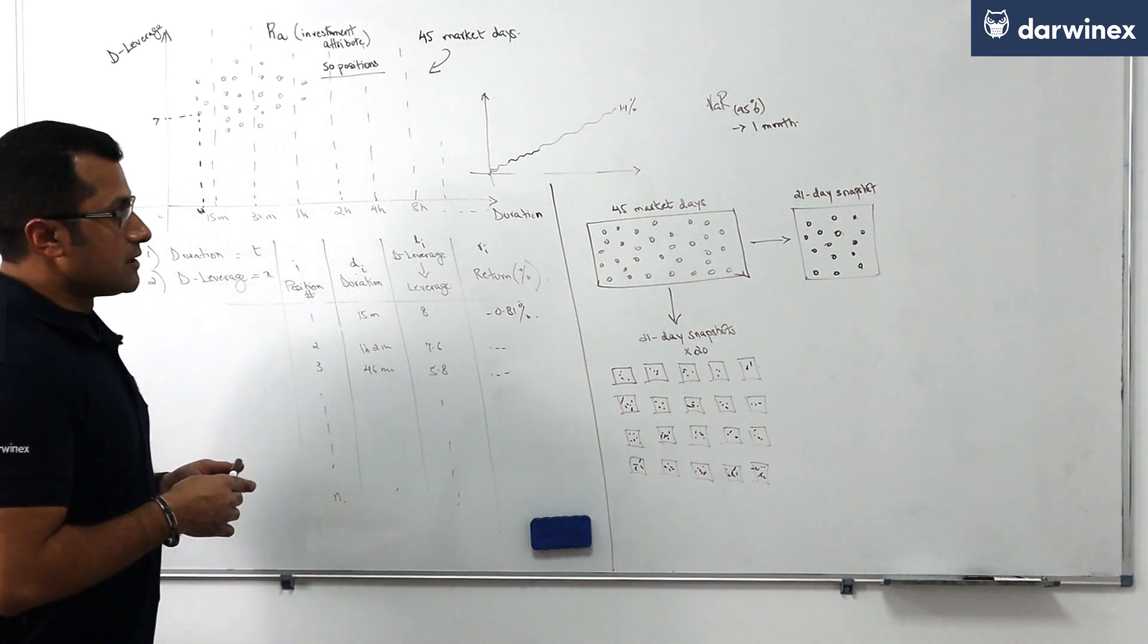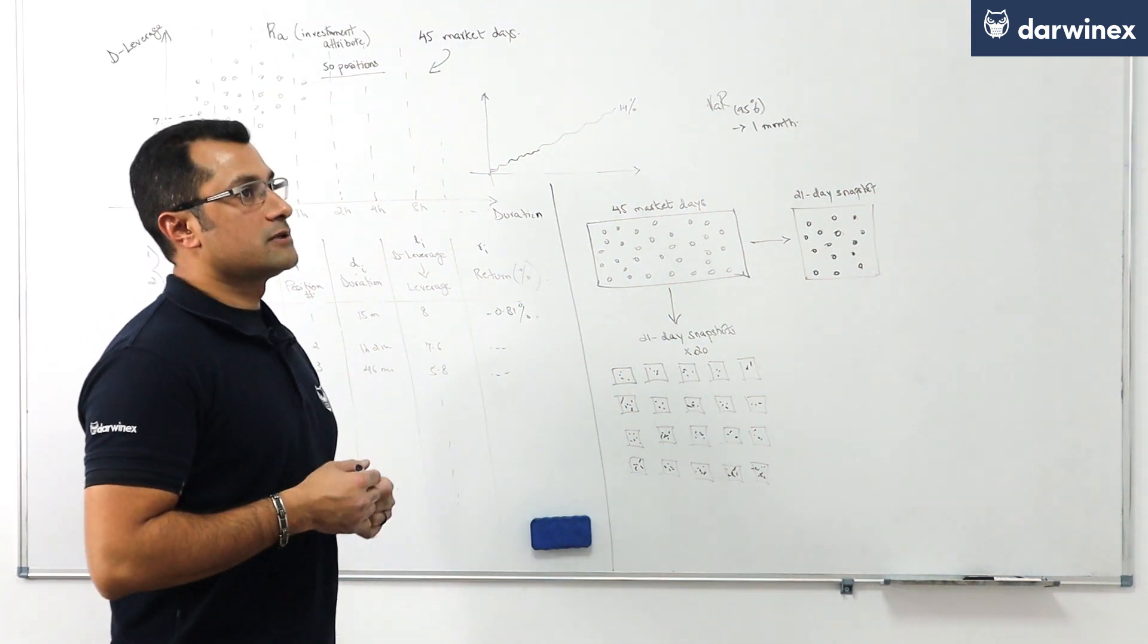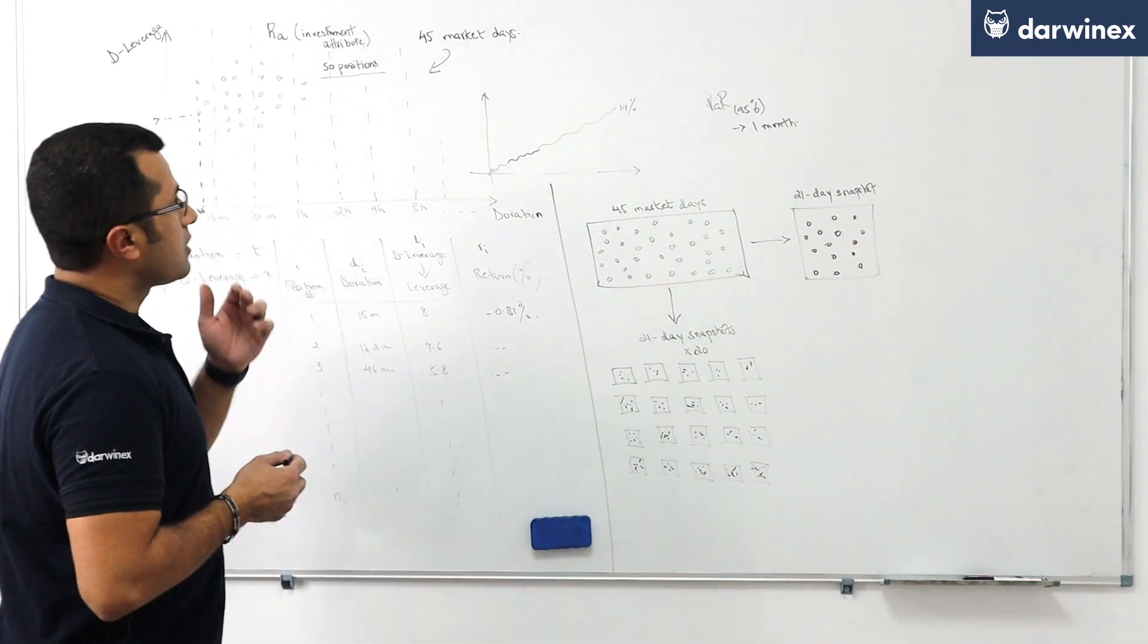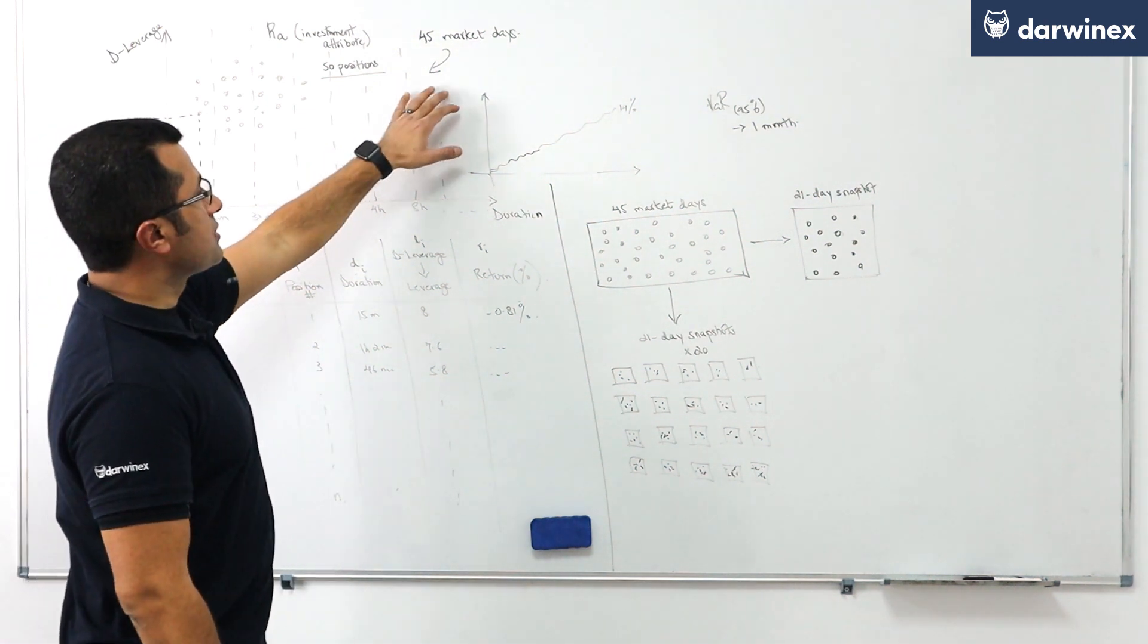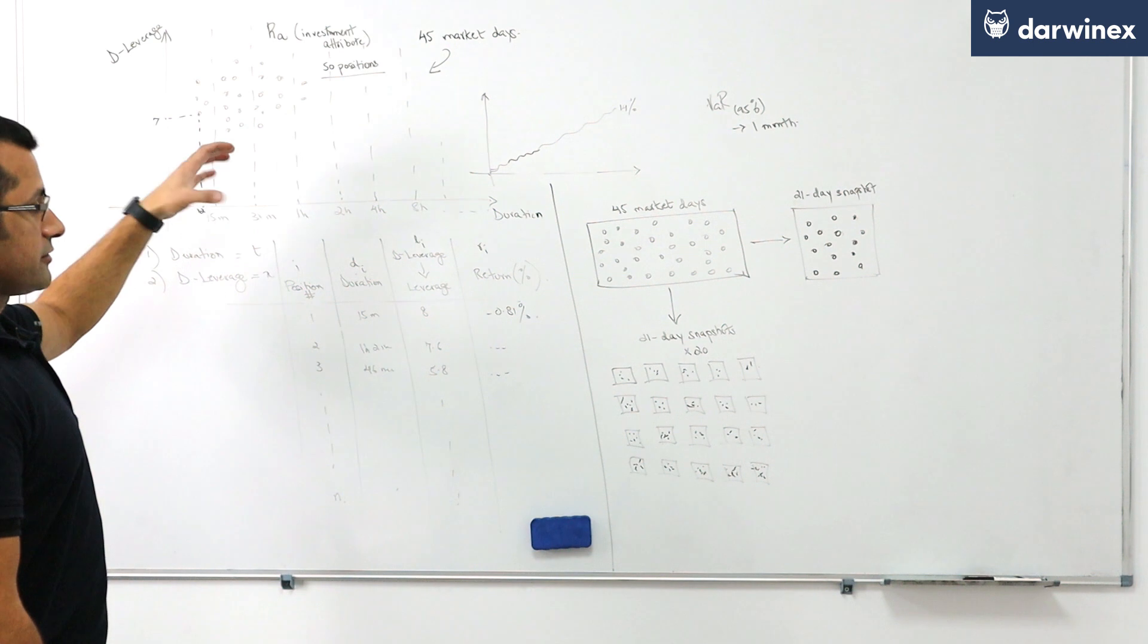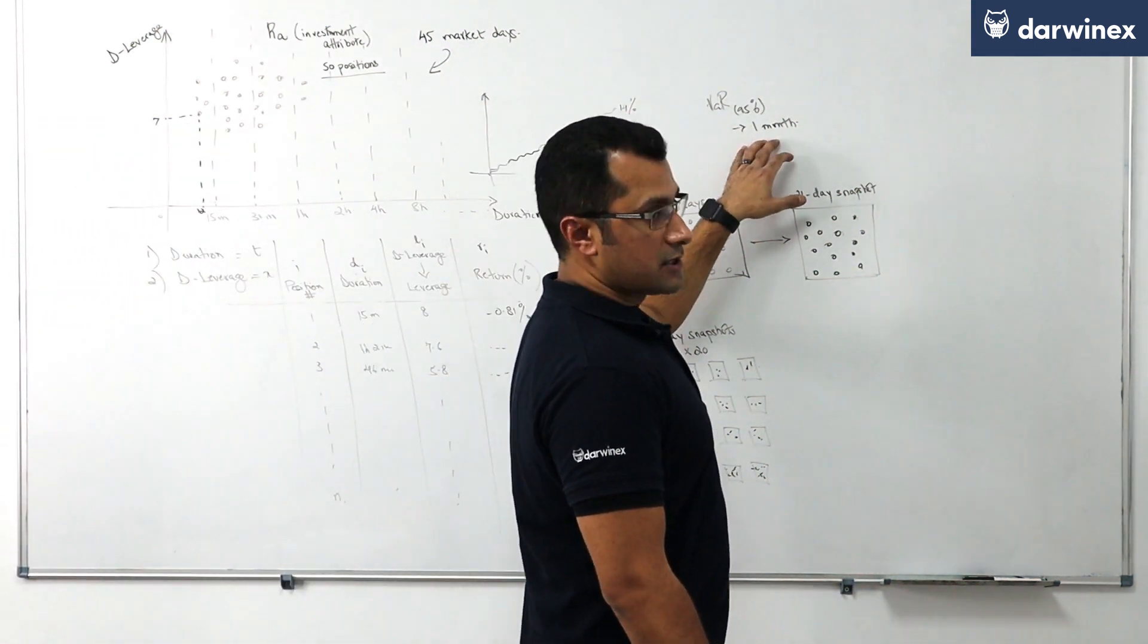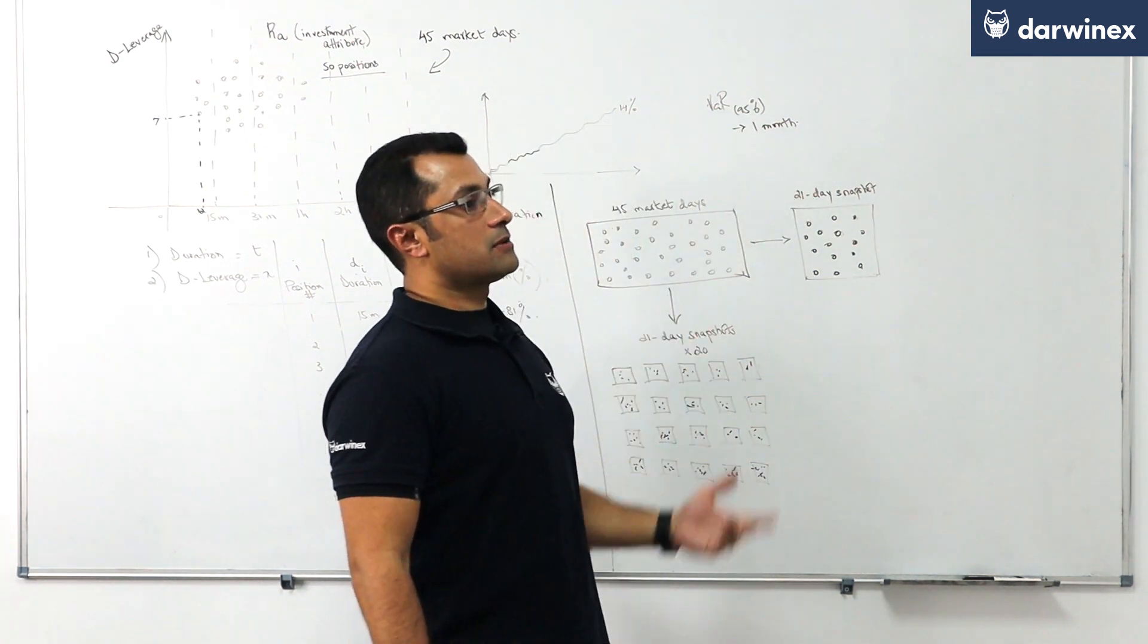To go forward with those Monte Carlo simulations, we first need to make an adjustment to the way we do things, given that our reference period for capturing the risk-taking behavior of the trader—the 45 days—is not equivalent to our target horizon of Value at Risk calculations, which is one month or 21 trading days.